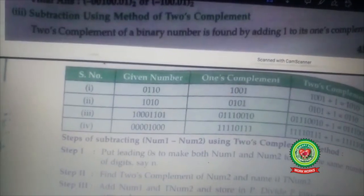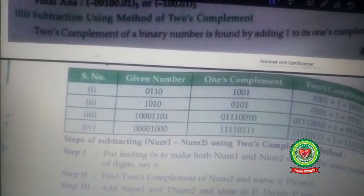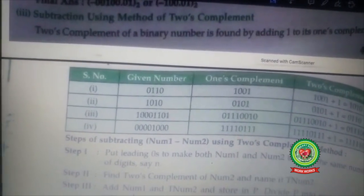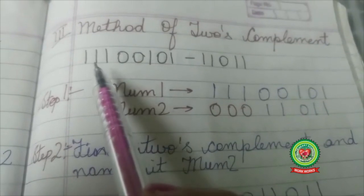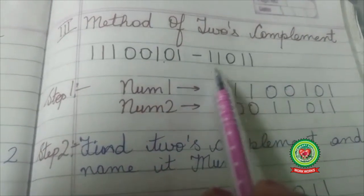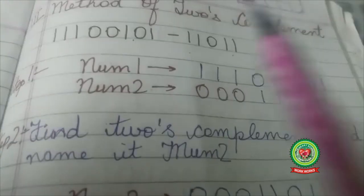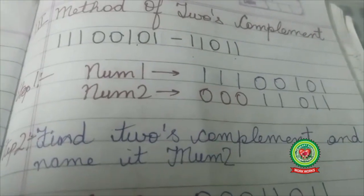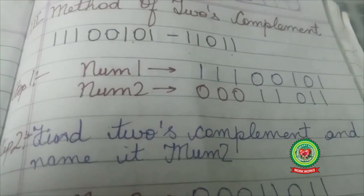Now we are going to learn subtraction using the method of two's complement. Let us consider an example. I am going to subtract 1 1 0 1 1 0 1 1 from 1 1 1 0 0 1 0 1.